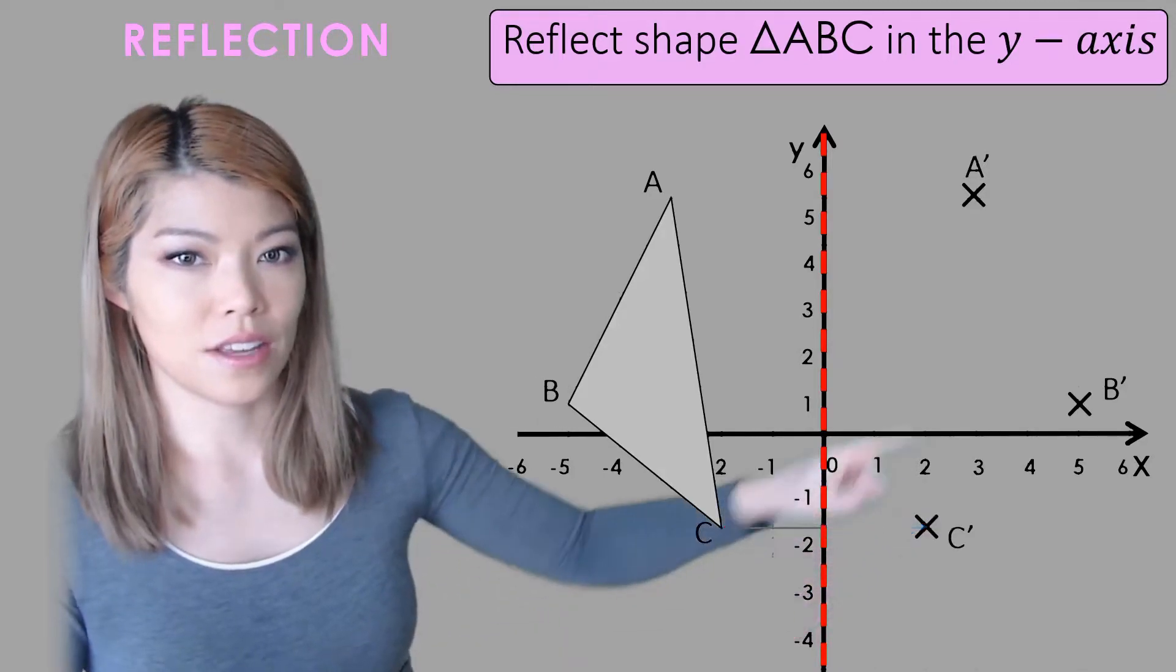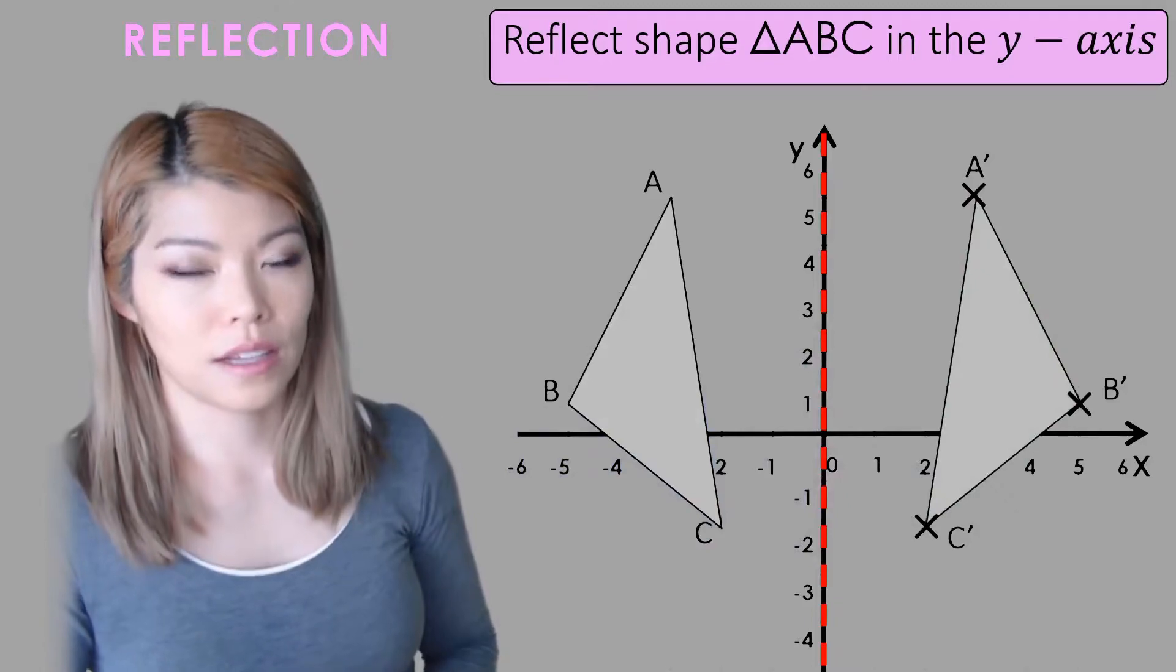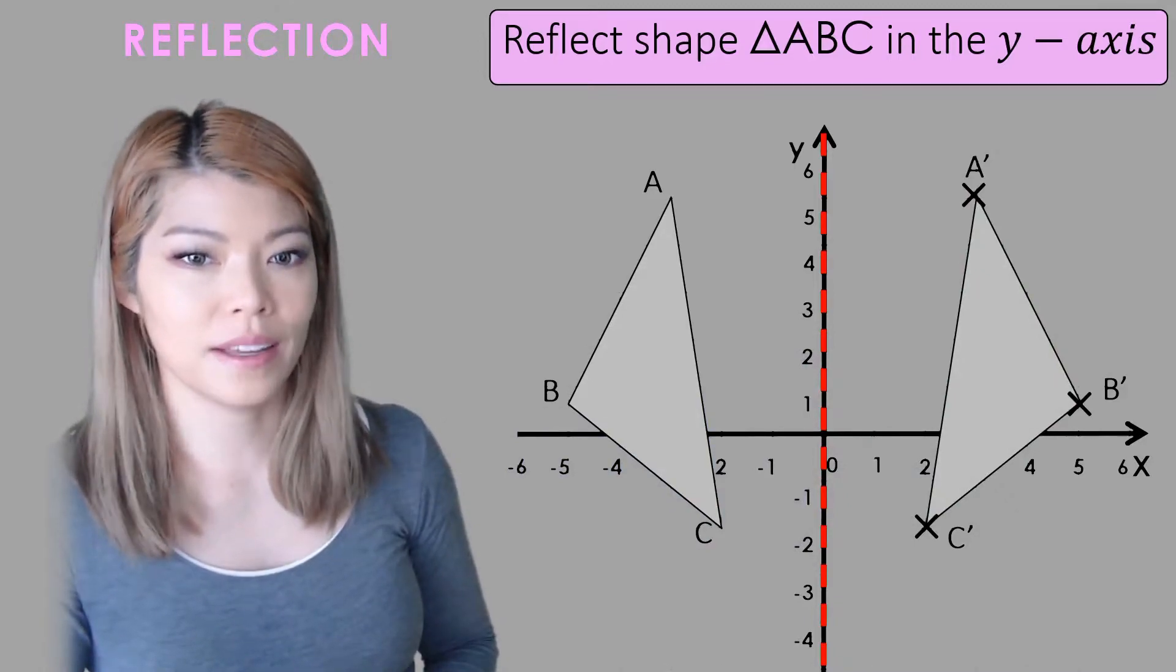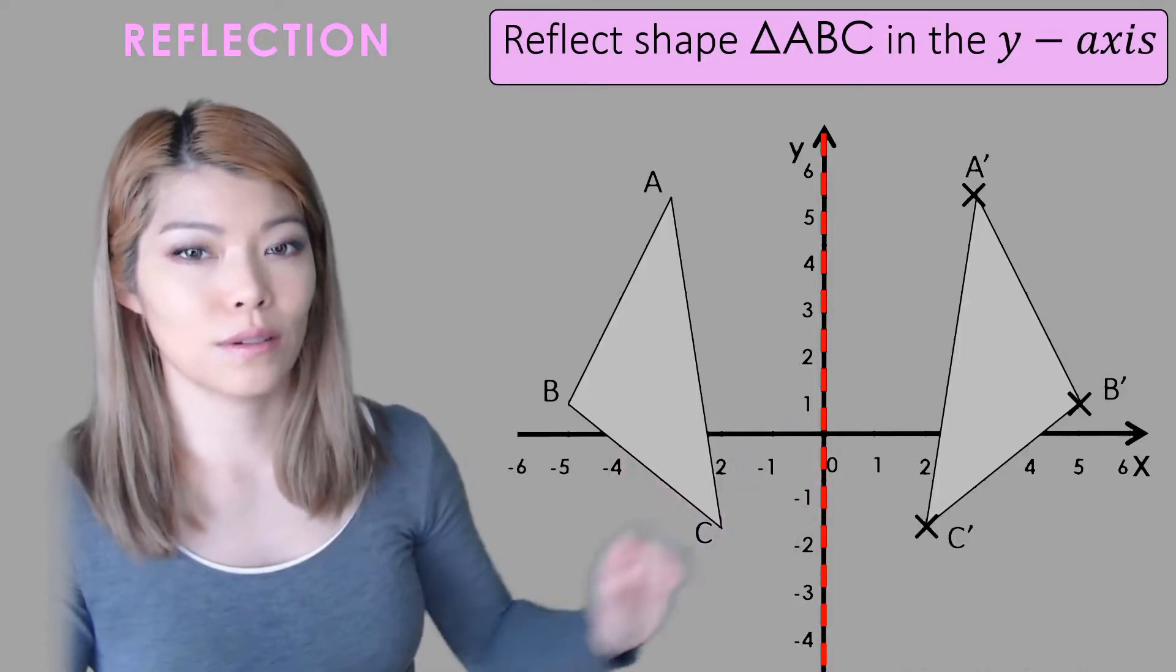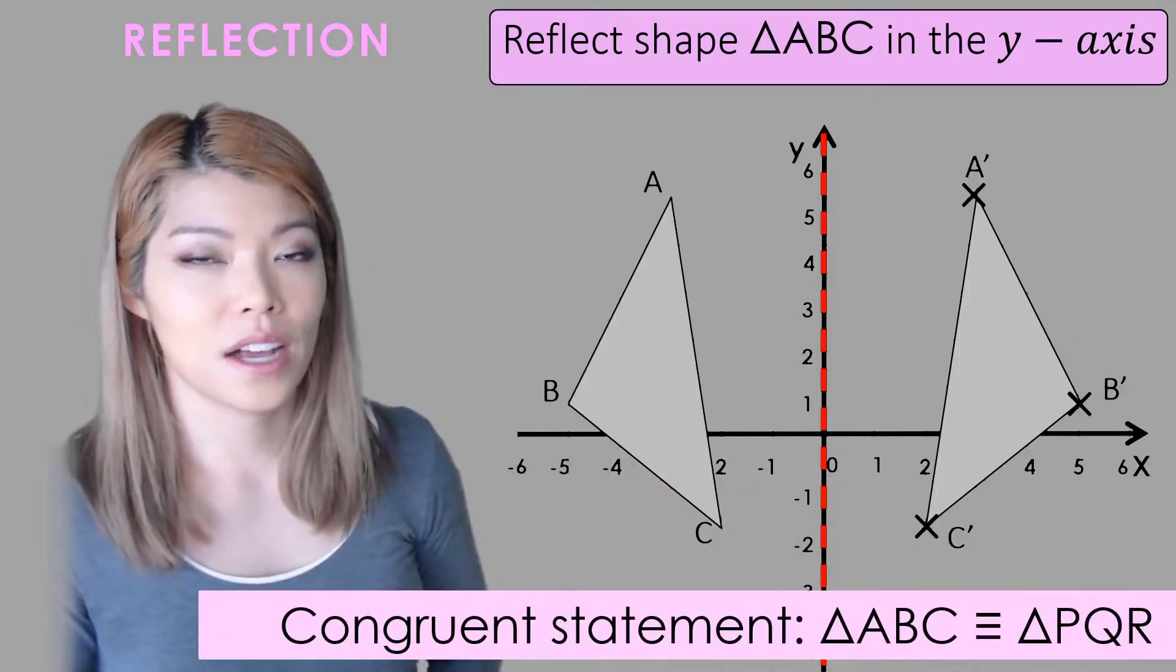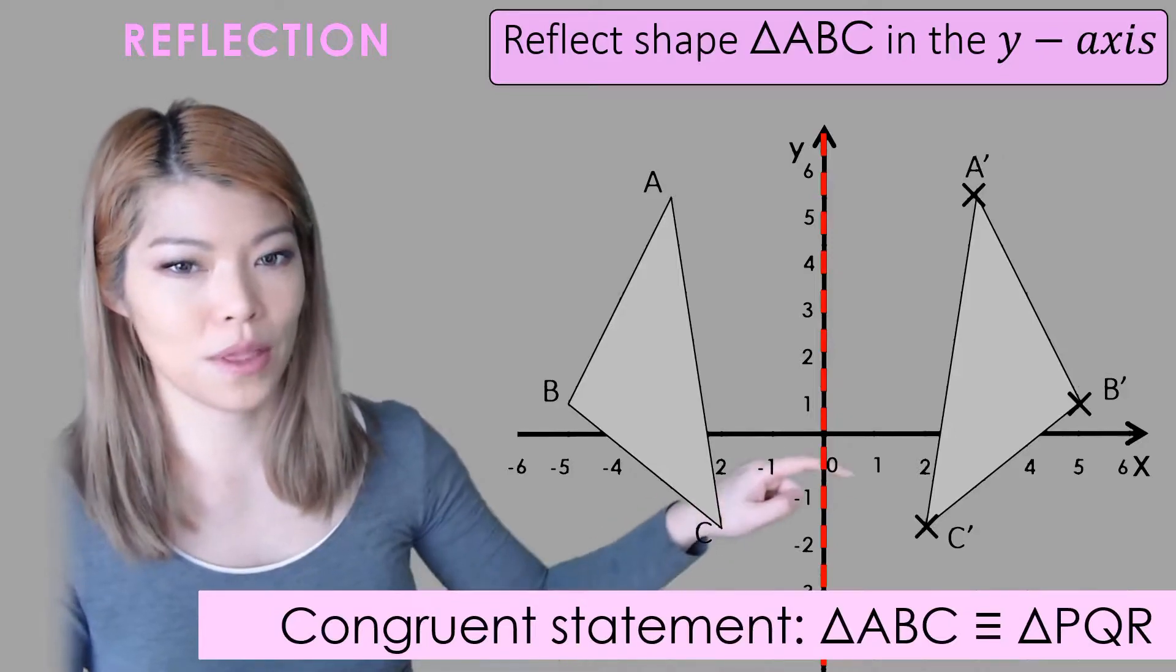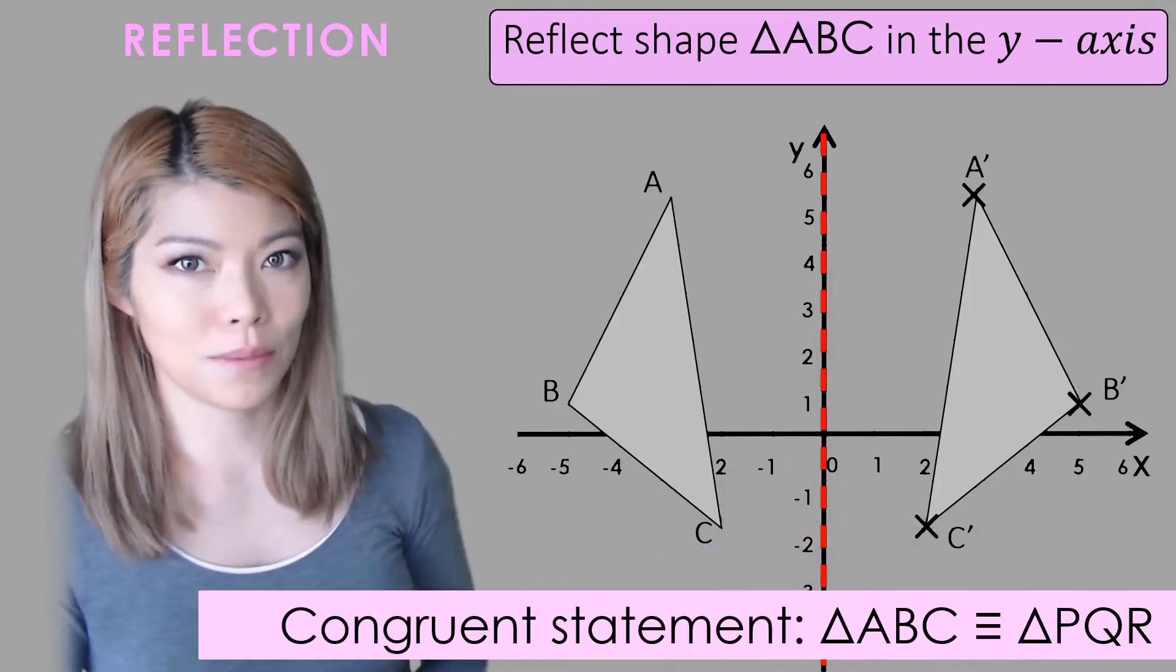And now you can join the three vertices and we have the new shape or the mirror image or the reflection. Now these two triangles are the same, in other words they're congruent to each other. Remember that symbol where the three lines means congruent.